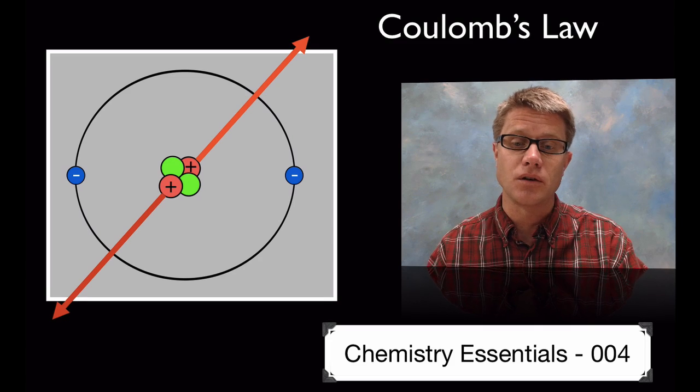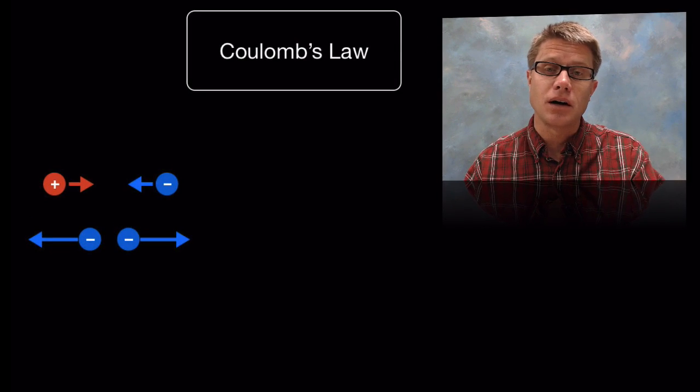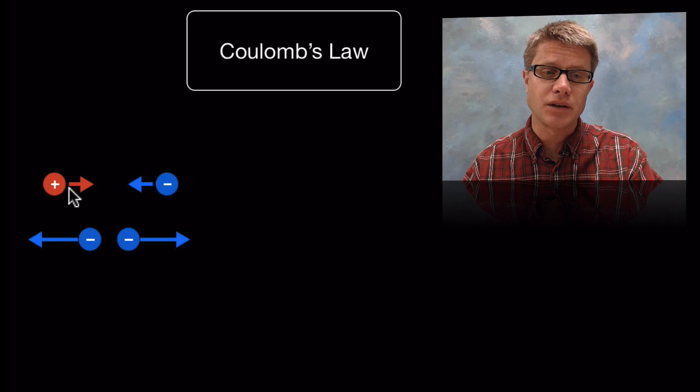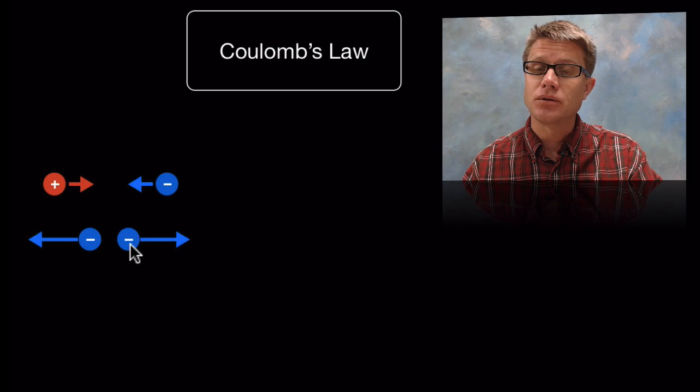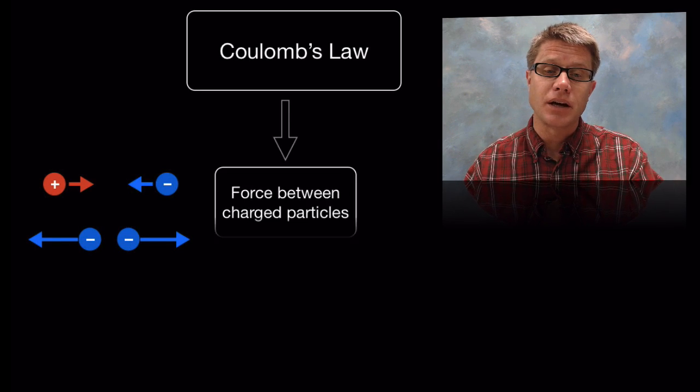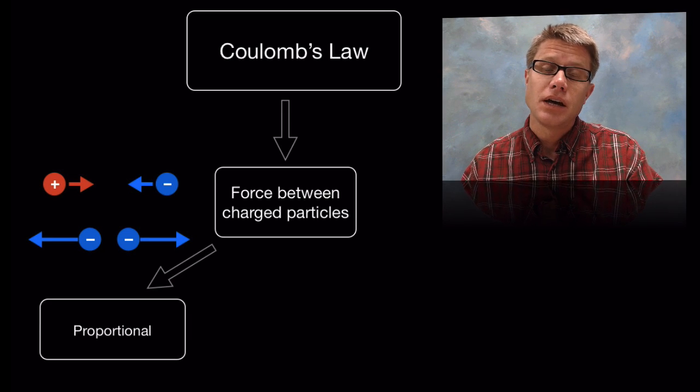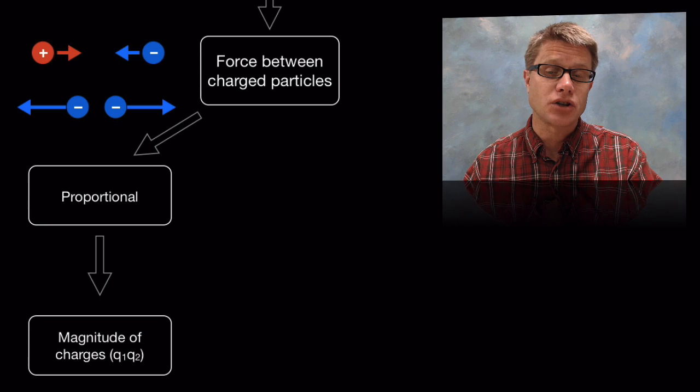And so it's sometimes referred to as the inverse square rule. And so let's get to Coulomb's law. And why is it important? Well again it shows us that positive and negative attract. And it also tells us that if we have two like charges they're going to repel. But the closer they get the bigger that charge is going to be.